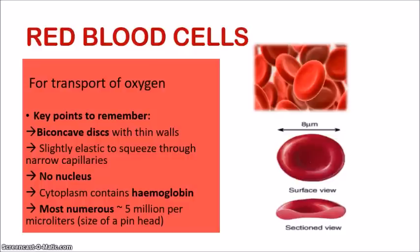A very important point to note: red blood cells do not have a nucleus. We know that all cells typically have a nucleus which controls various functions and activities in the cell, but the red blood cell is different — there is no nucleus. The reason for this is that the nucleus takes up space in the cell, and the red blood cell's main interest is in transporting the red pigment hemoglobin. So more space is needed for hemoglobin to be transported.